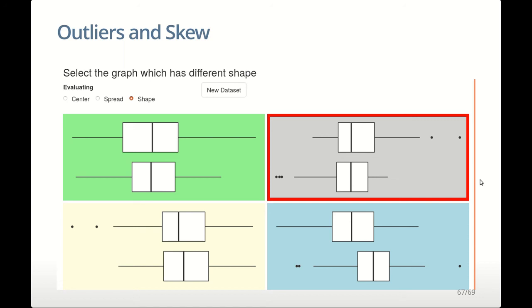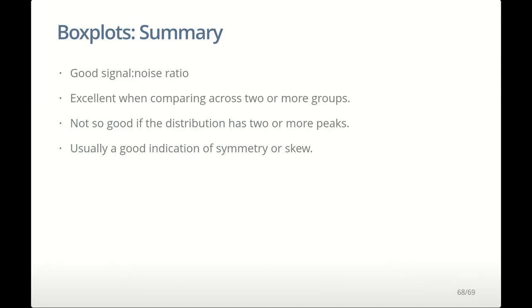Overall, box plots are pretty good, particularly good when comparing multiple groups because you can put them side by side. You've got to be very careful if the data has more than one peak because the box plot can be very misleading in that case. If the data only has one peak, the box plot can give you a very good summary of where the center is, how much spread there is, and what the shape is — whether it's skewed to the left or right. And that's it for today.